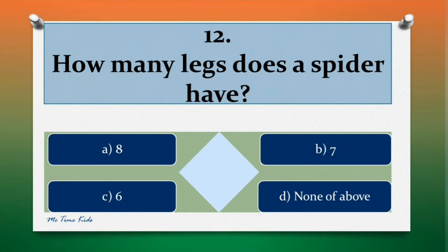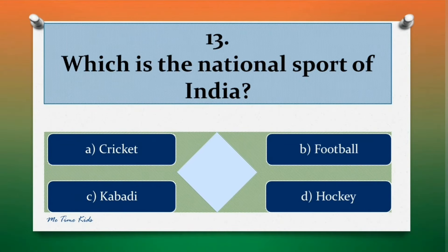Question 12. How many legs does a spider have? Options are: a. 8, b. 7, c. 6, d. None of above. Correct answer is a. 8.